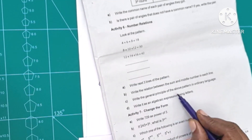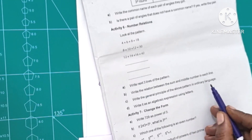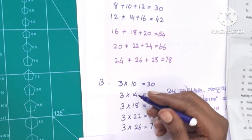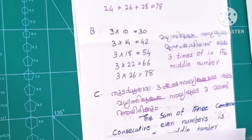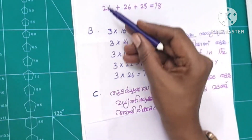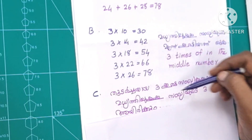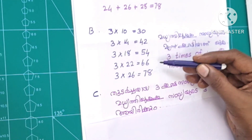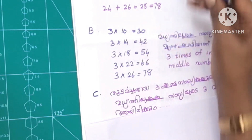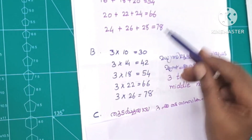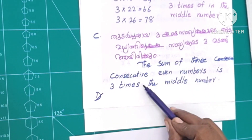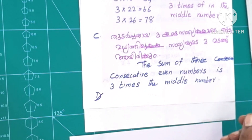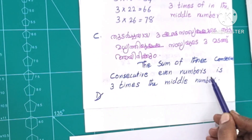Write the general principle of the above parts in ordinary language. The sum of 3 consecutive even numbers is 3 times the middle number. We can also state it in English: the sum of 3 consecutive even numbers is 3 times the middle number.